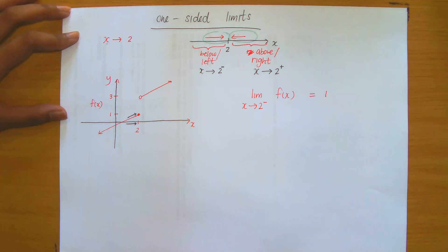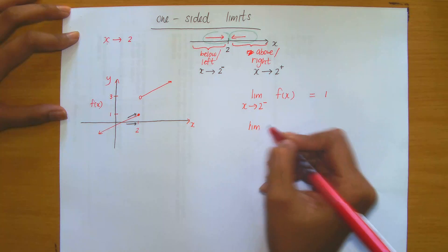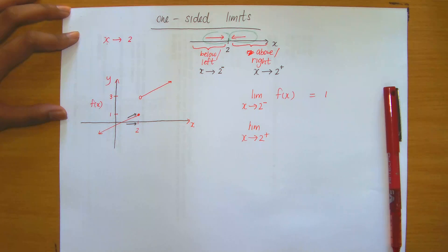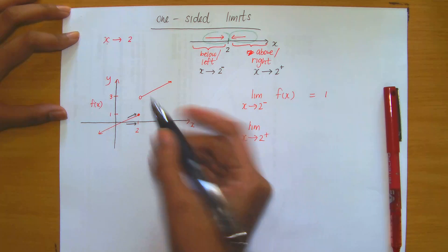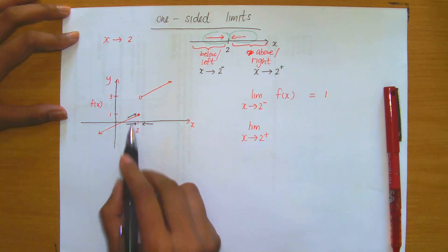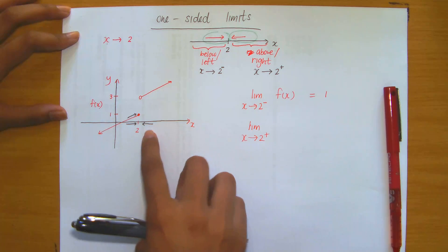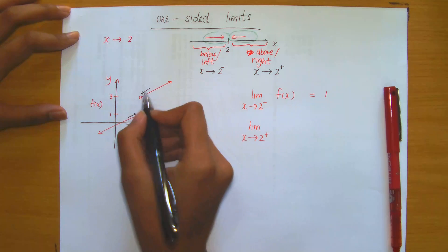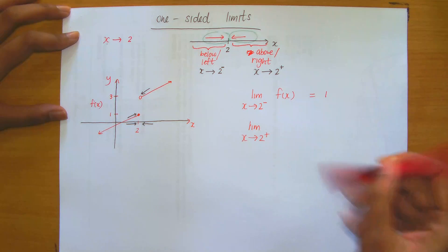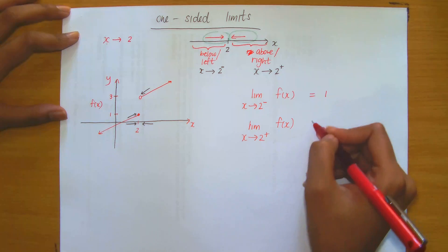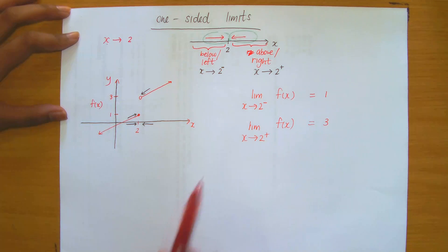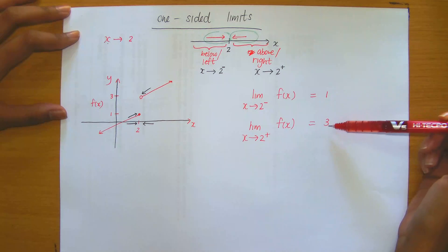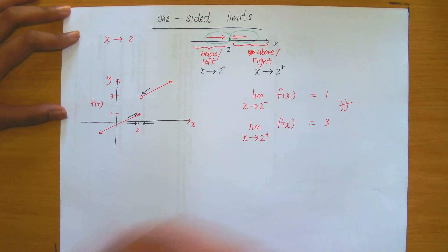So the limit of f(x) as x approaches 2 from the left is 1. Now let's consider what happens to f(x) as we approach 2 from the right-hand side, referring to all values above 2. As x approaches 2 from above, observe that f(x) approaches 3. So the limit of f(x) as x approaches 2 from above is 3. From this example, we can clearly see that the one-sided limits need not equal one another — these are not equal.